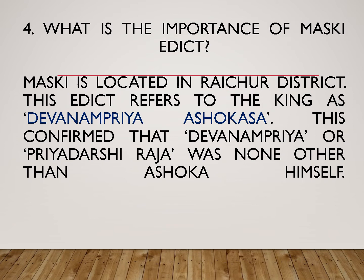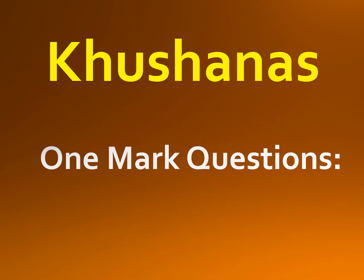What is the importance of the Maski edict? Maski is located in Raichur district. This edict refers to the king as Devanampriya Ashoka. This confirmed that Devanampriya or Priyadarshi Raja was none other than Ashoka himself.